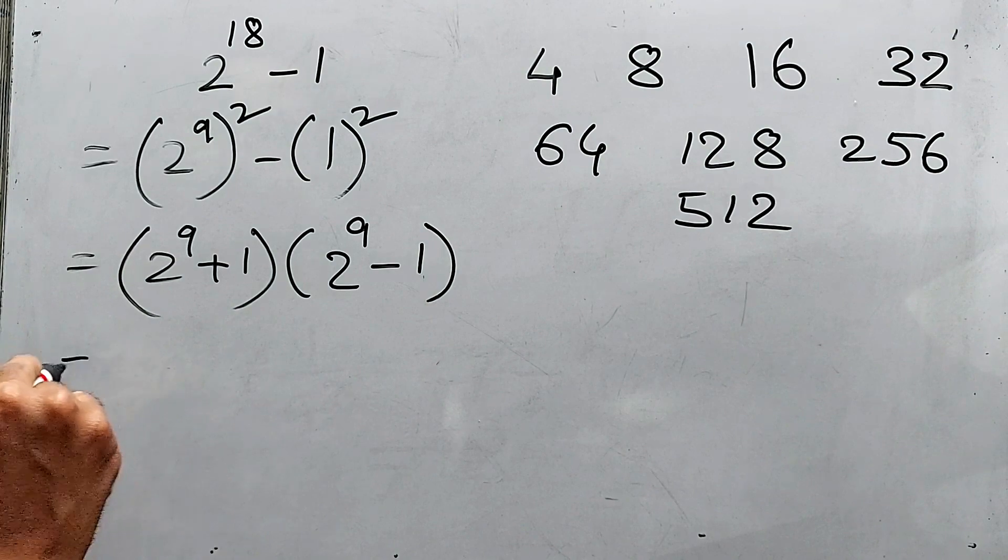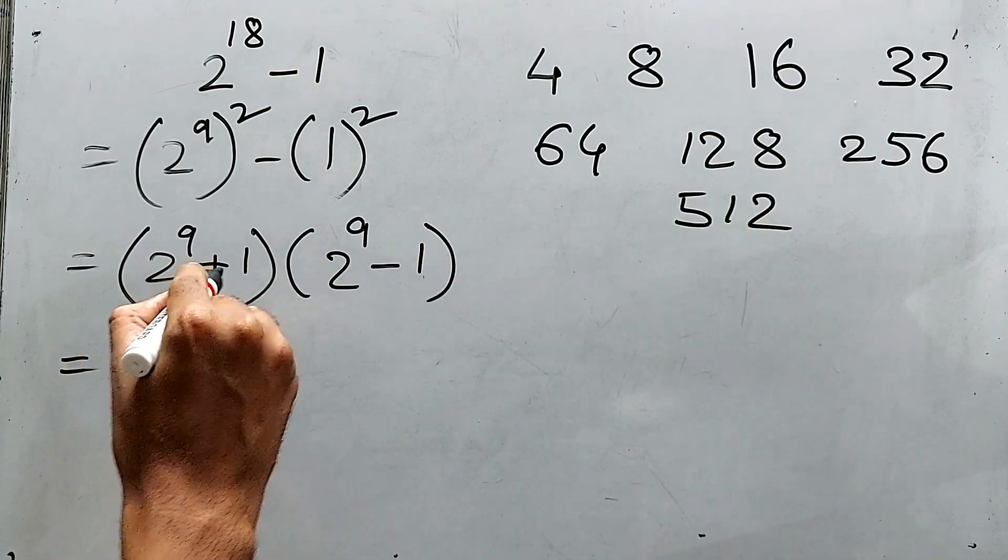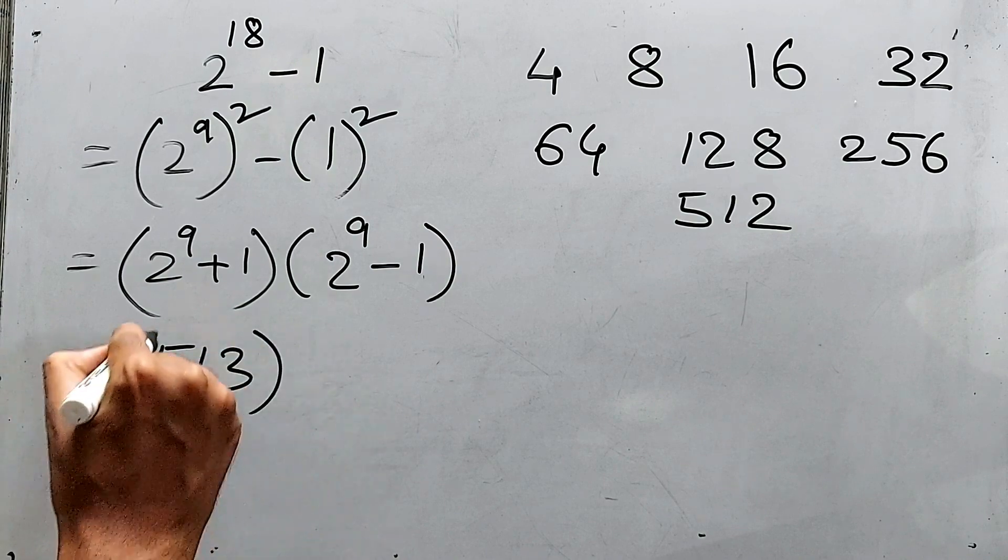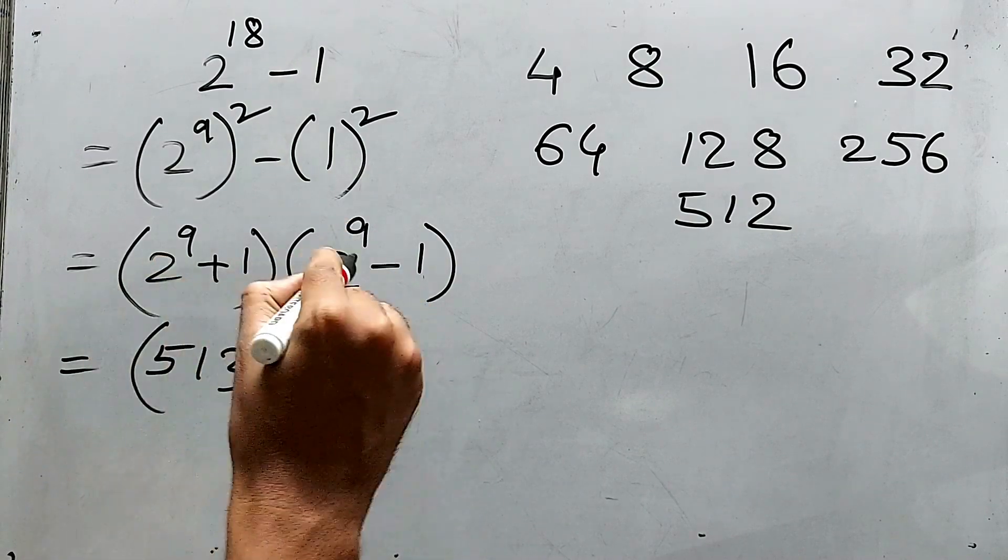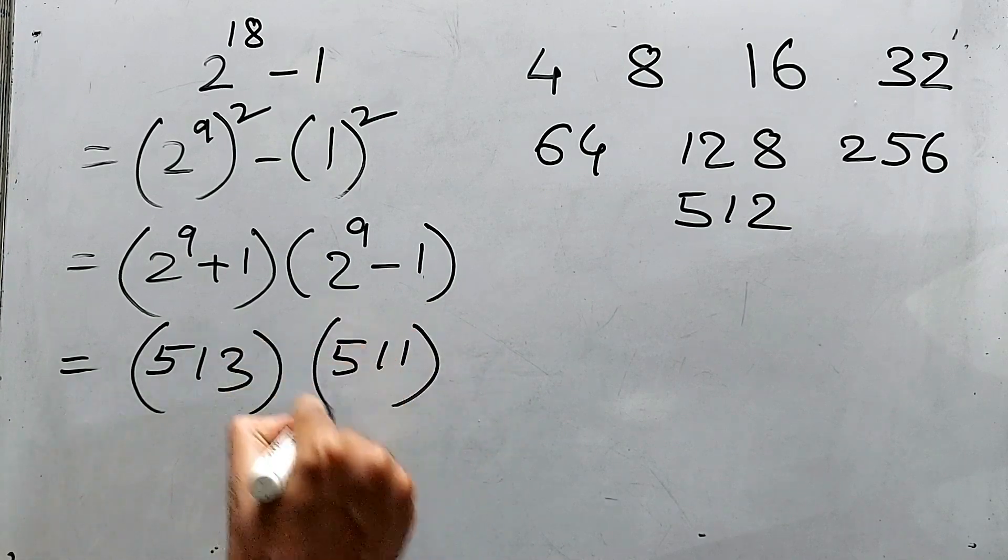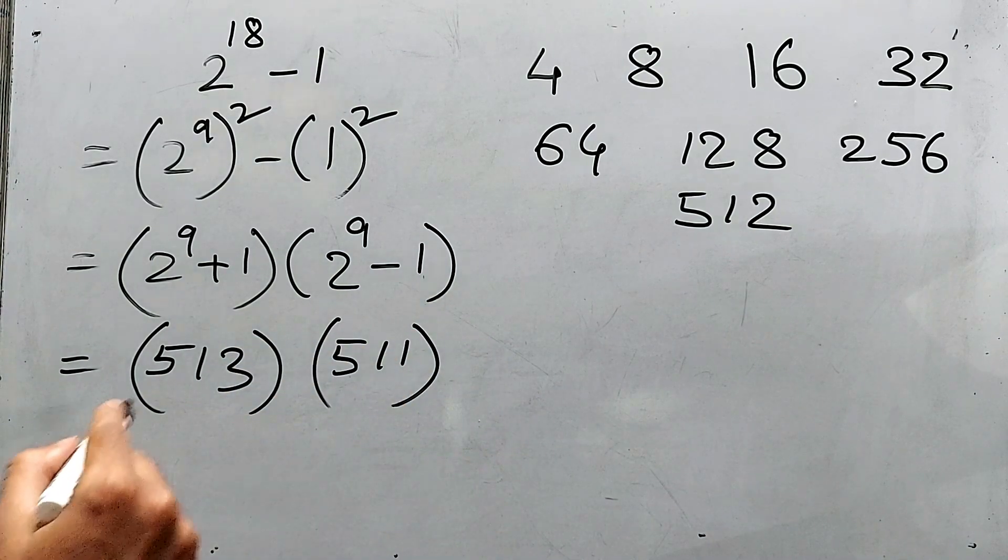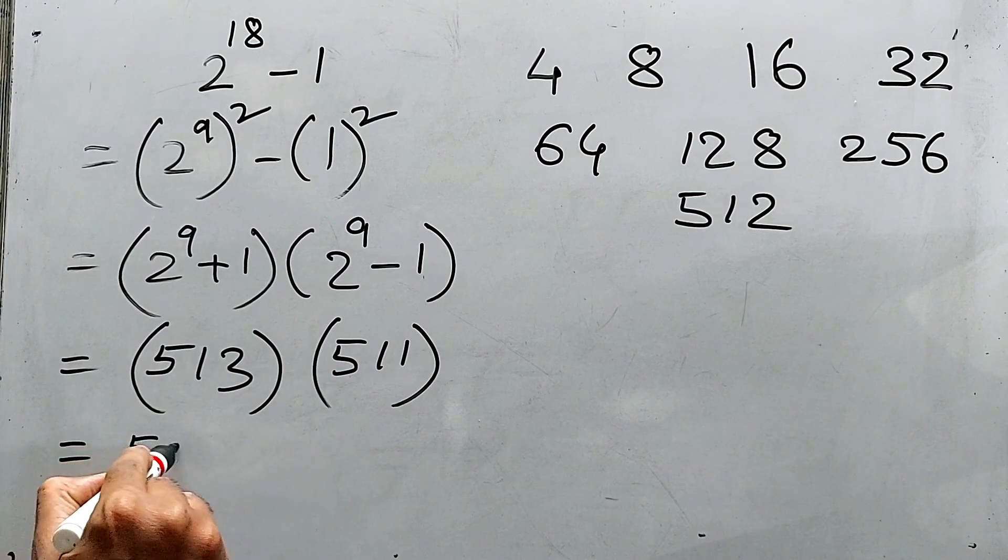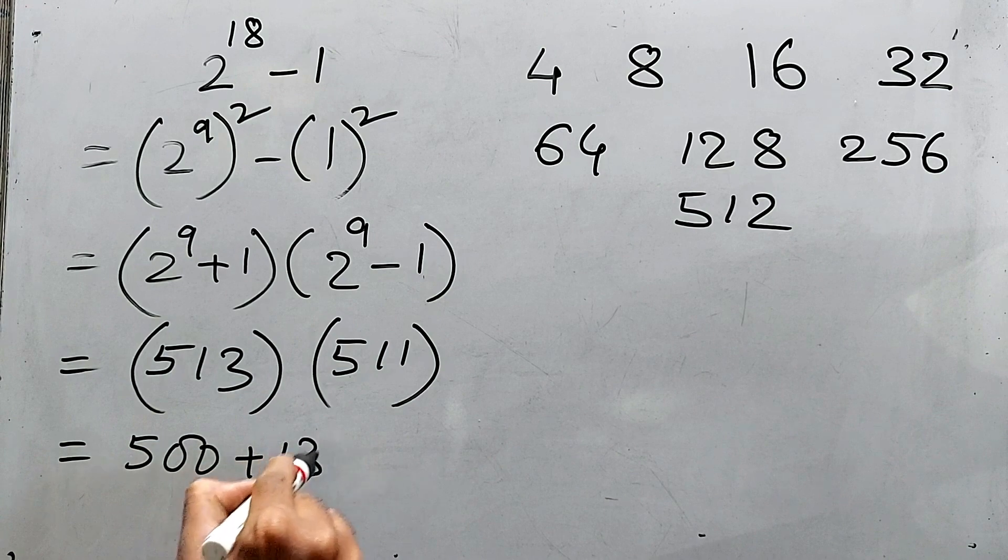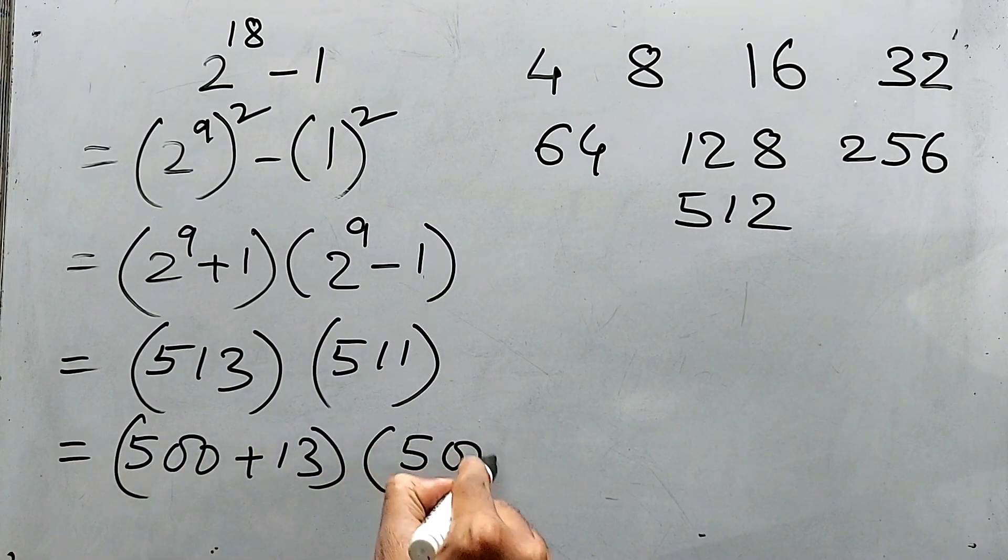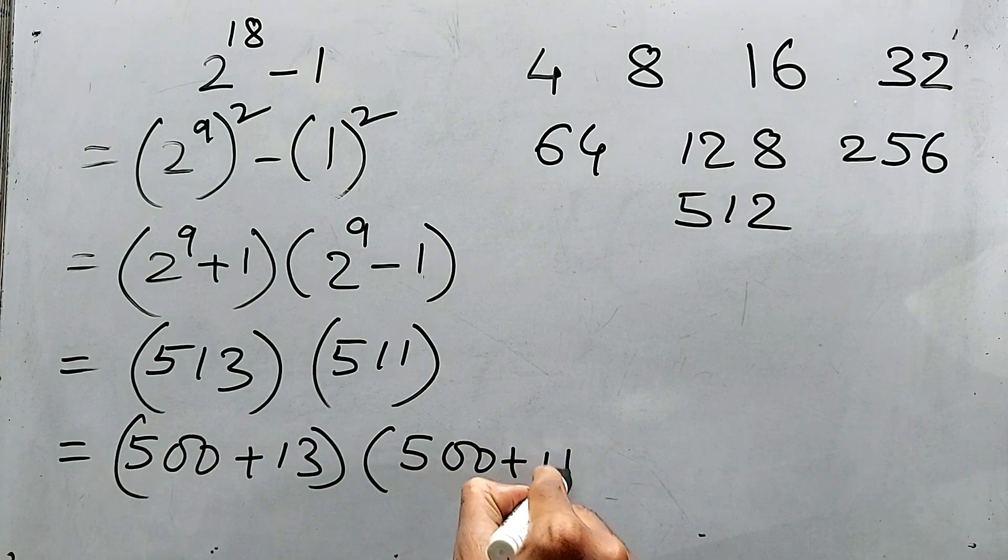So 512 plus 1 is 513, and 512 minus 1 is 511. Now the easiest part: that is 500 plus 13 and 500 plus 11.